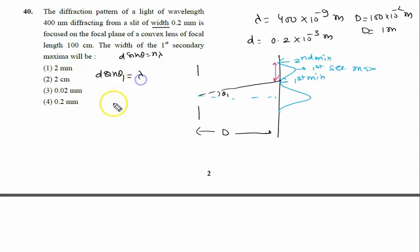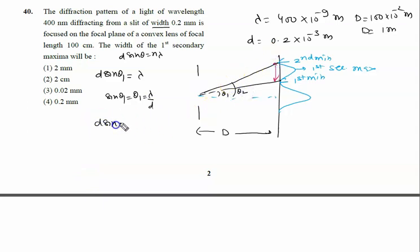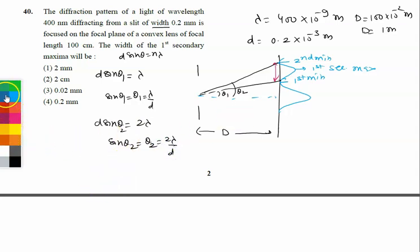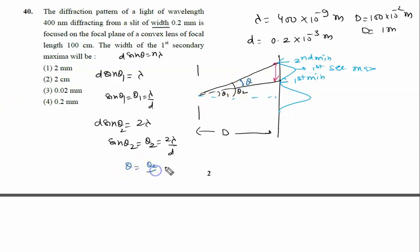For the first minimum, n=1, so sinθ₁ ≈ θ₁ = λ/d. For the second minimum, d·sinθ₂ = 2λ, so sinθ₂ ≈ θ₂ = 2λ/d. The angular width of the first secondary maximum is θ = θ₂ − θ₁ = 2λ/d − λ/d = λ/d. Here we use the small angle approximation where sinθ ≈ θ.